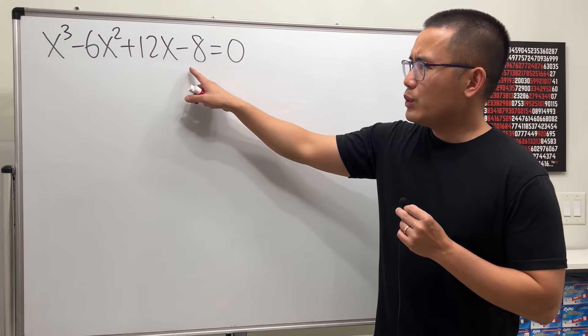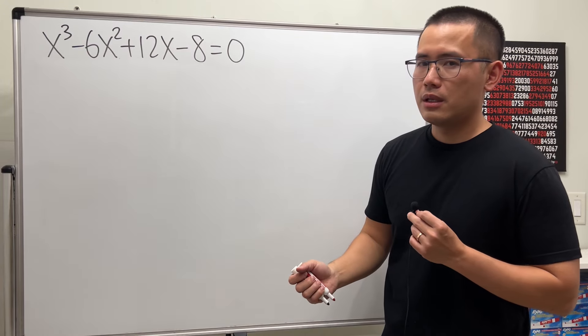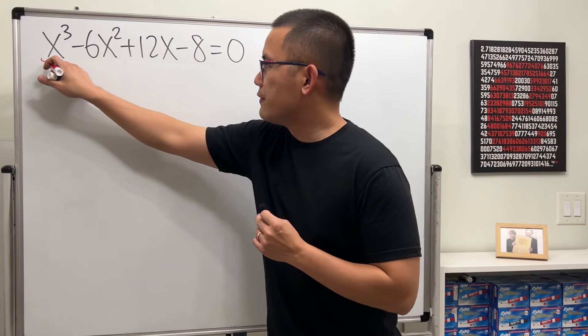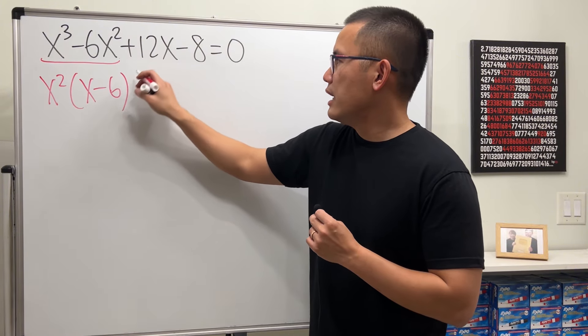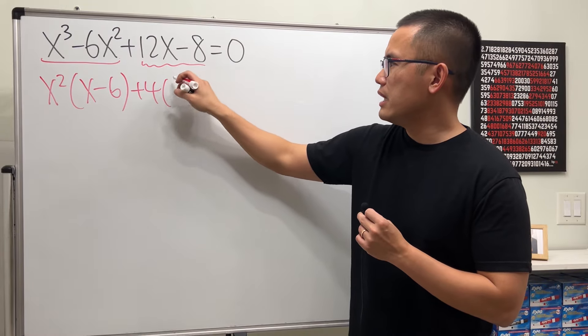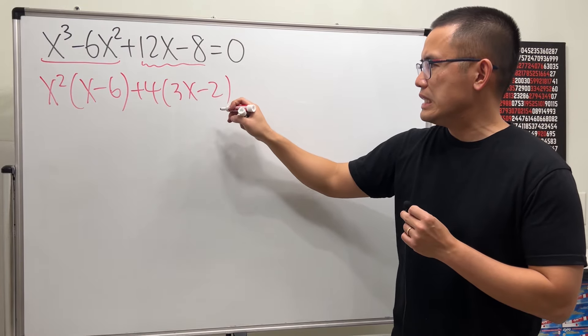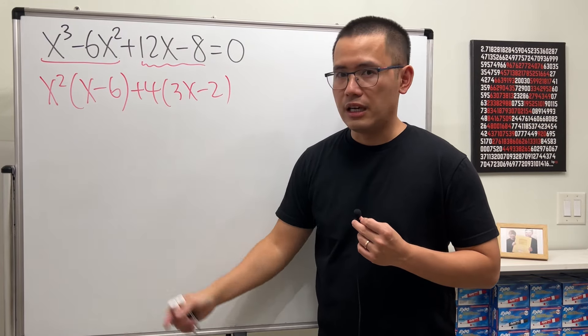First, notice that we have four terms, so maybe you want to try to factor this by grouping. If you just try the first two terms and factor out x squared and get x minus 6, and then the last two terms, factor out plus 4 and get 3x minus 2. I don't think we can proceed because this and that, they are different.